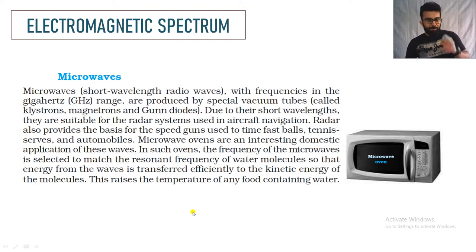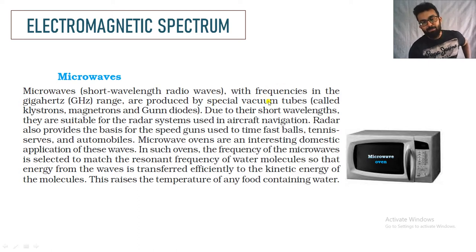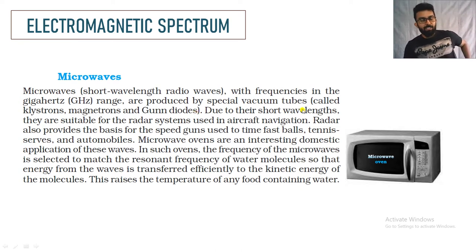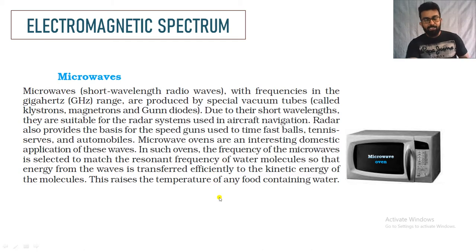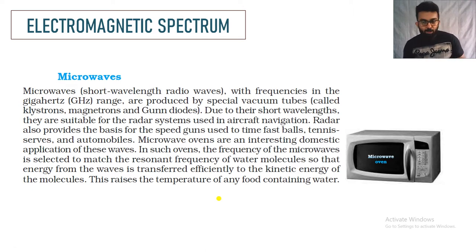Next are microwaves — short wavelength radio waves with frequencies in the gigahertz range — produced by special vacuum tubes called klystrons, magnetrons, and gun diodes. Because of the short wavelength, they are used in aircraft navigation, radar systems, and speed guns, where we measure the speed of balls or tennis shots.